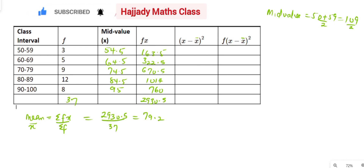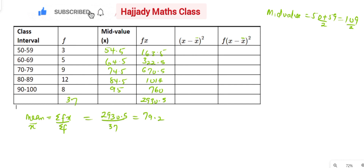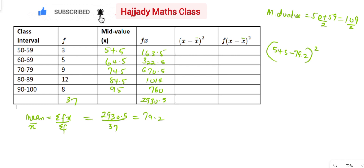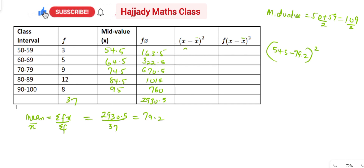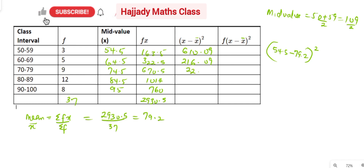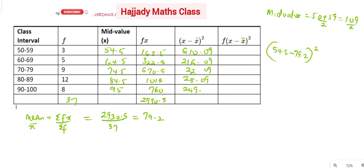What we need to do now is get x minus x̄ and square it. For the first value, x is 54.5, so we have 54.5 minus x̄ which is 79.2, then subtract and square. Using a calculator: 54.5 minus 79.2 squared gives 610.09. For the second one, 64.5 minus 79.2 squared gives 216.09. Here I'm going to have 22.09. Here, 28.09. And here, 249.64.